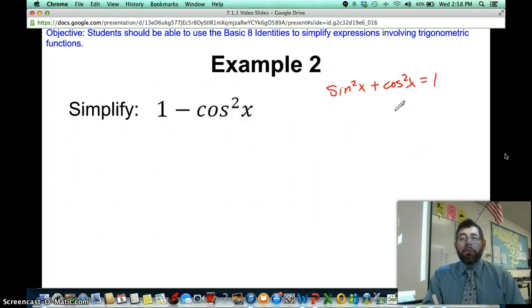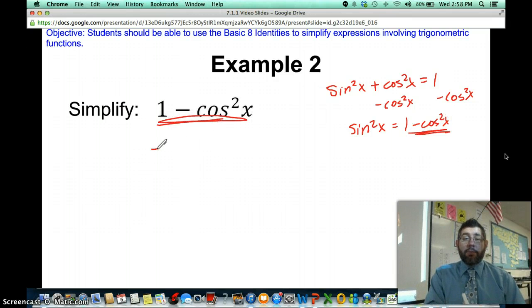What if I just use a little algebra here and subtract cosine squared from both sides? What do I get? I get sine squared equals one minus cosine squared. Look at that. That's right here. That must be equal to sine squared.